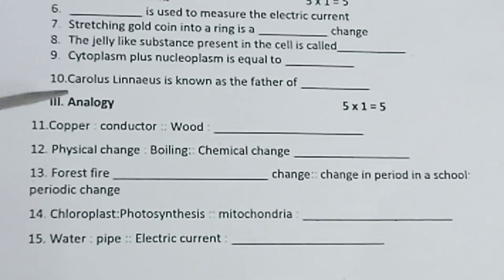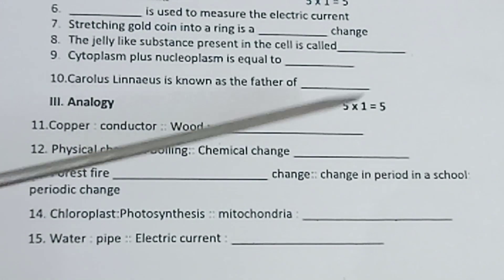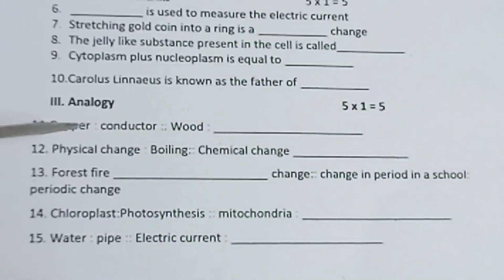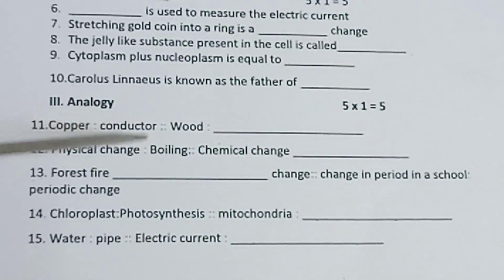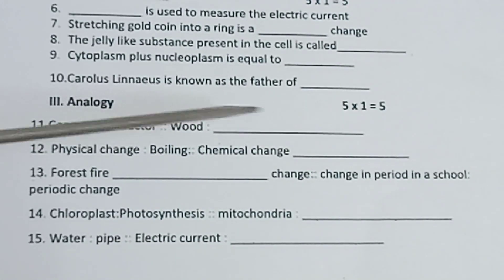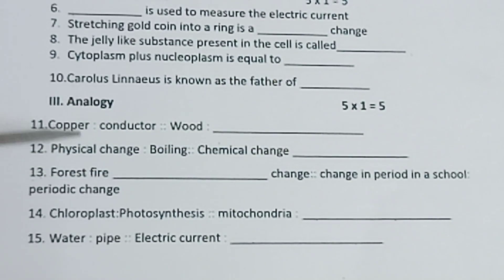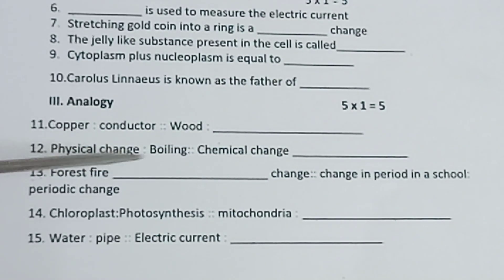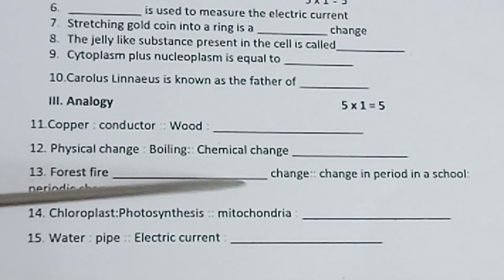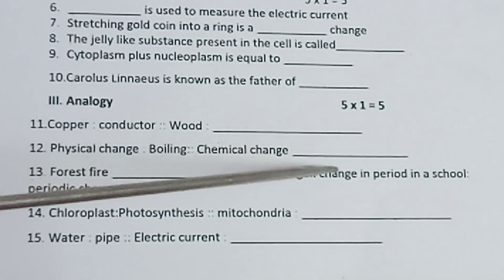Section III — analogy. 5 into 1 is equal to 5. Eleventh one: Copper — conductor; dash. Twelfth one: physical change — boiling; chemical change — dash.